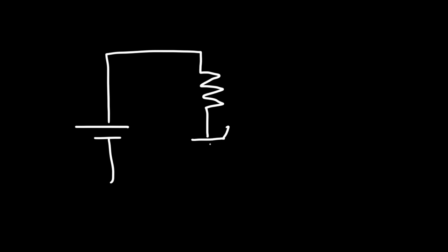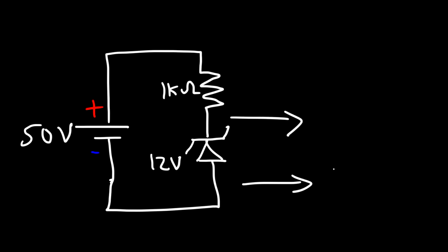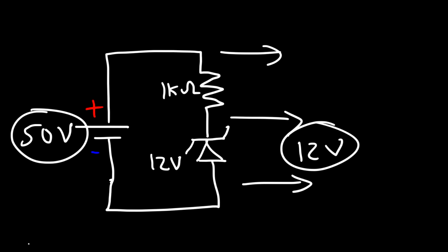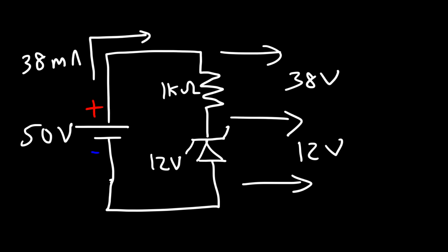Now let's increase the voltage of the battery. Using the same circuit with a 12 volt Zener diode, this time let's use a 50 volt battery. The voltage across the Zener diode will still be approximately 12 volts, which means the voltage across the resistor has to be 50 minus 12, or 38 volts. Taking 38 volts divided by 1 kilohm gives us a current of 38 milliamps flowing through that resistor and through the entire circuit.